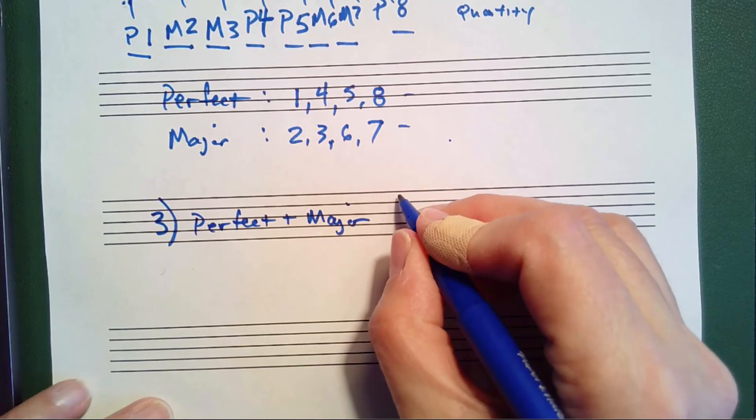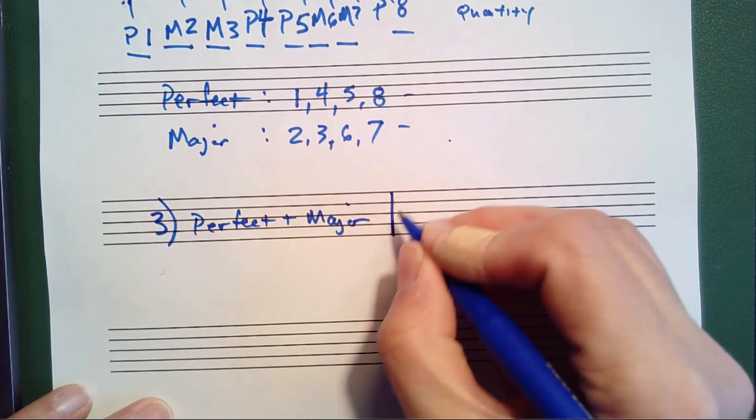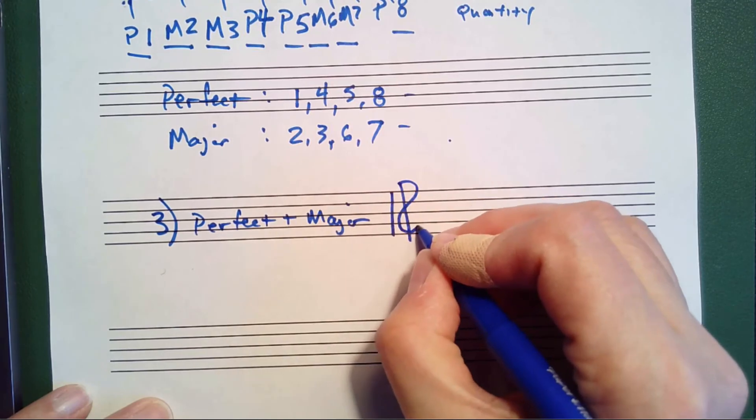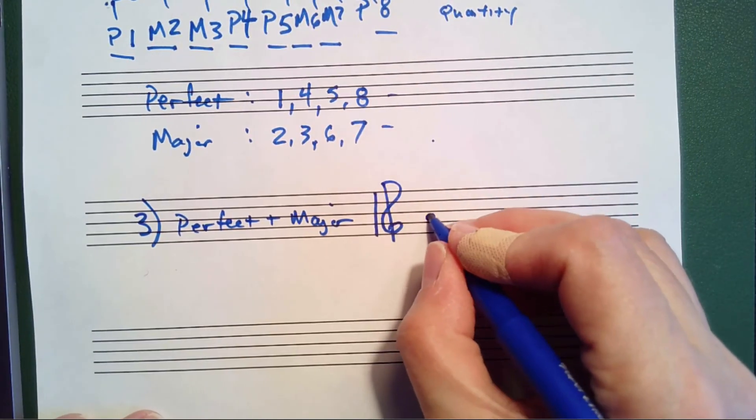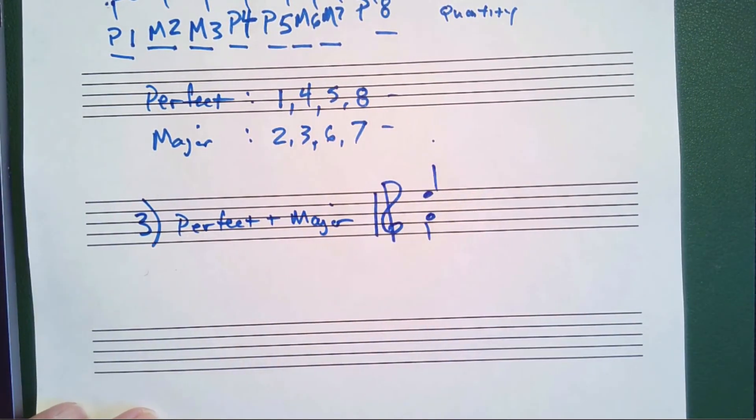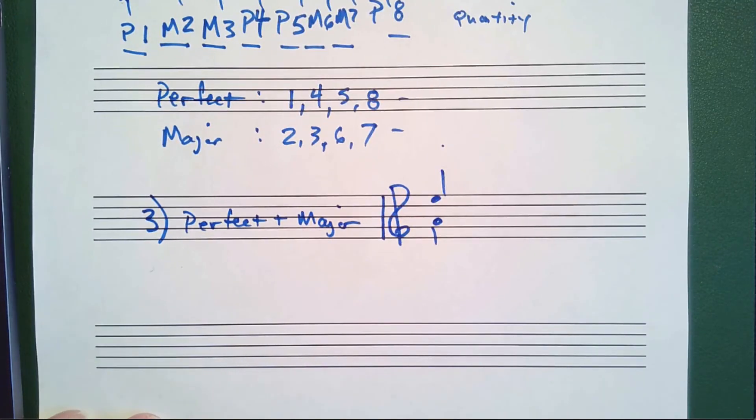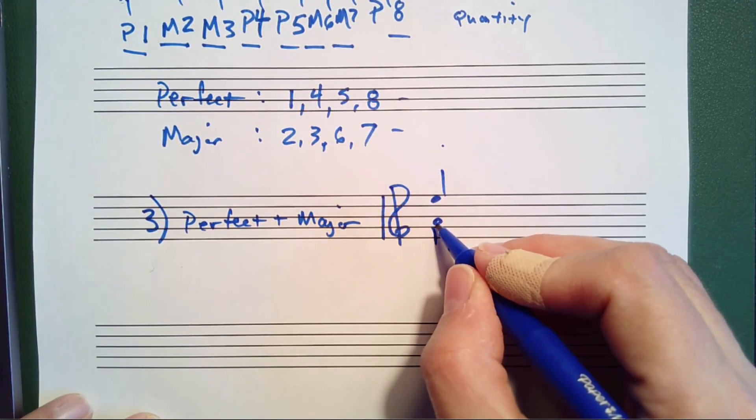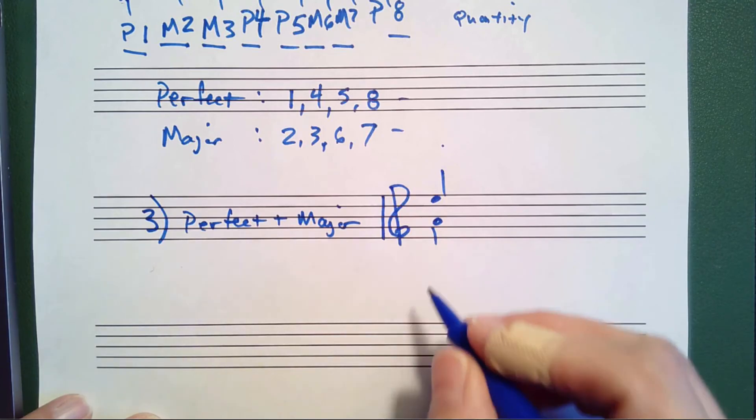Okay, so first of all, let's identify some intervals. Here's an interval, A to E. Step number one, we count A, B, C, D, E, so this is a fifth.